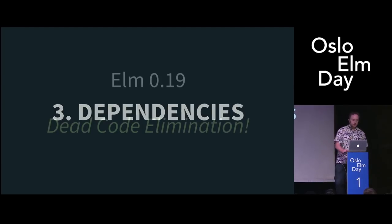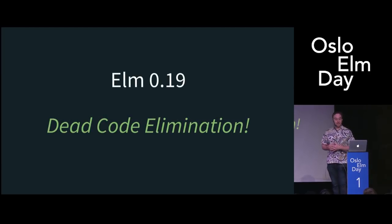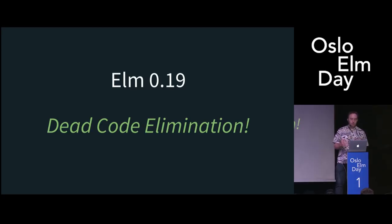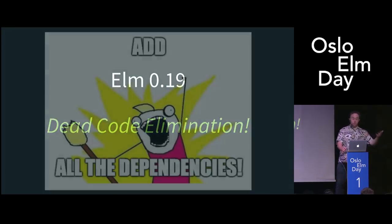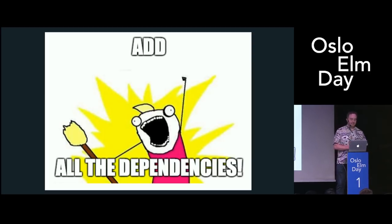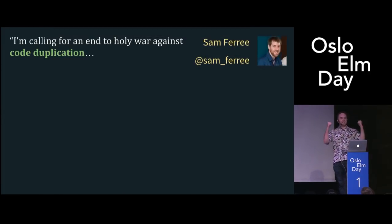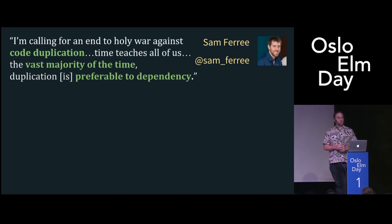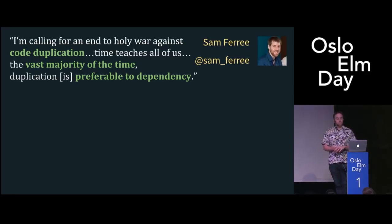Let's talk about dependencies. Elm 19 introduced dead code elimination and made it so that the cost of adding a new dependency was really reduced — it was no longer as big a deal for your bundle size. Which means of course that we should now add all the dependencies like it's free. Or maybe not, because bundle size is not really the only thing that impacts whether or not it's a good idea to add a dependency. I saw this great tweet recently: 'I'm calling for an end to holy war against code duplication. Time teaches all of us: the vast majority of the time, duplication is preferable to dependency.' I wouldn't go that far, but I think more often than we think. Evan likes to say there's a difference between things being similar and things being the same — it's actually really easy in programming to say these are so similar I want them to be the same, and then you're actually making the code worse.